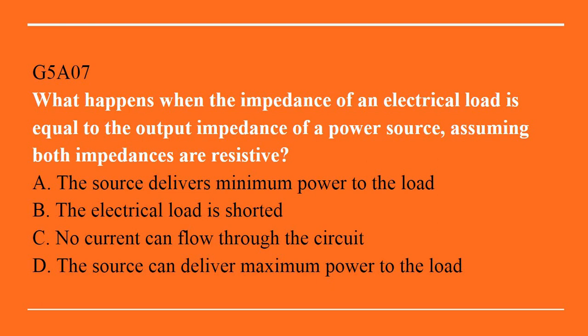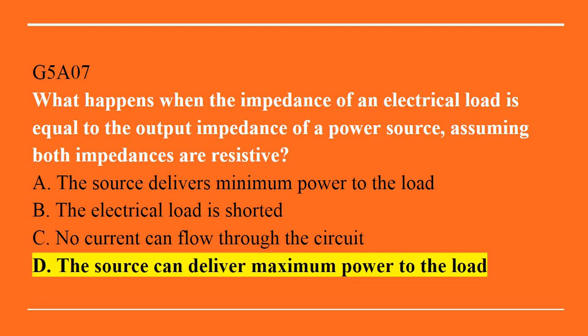G5A07: what happens when the impedance of an electrical load is equal to the output impedance of the power source, assuming both impedances are resistive? A. The source delivers minimum power to the load. B. The electrical load is shorted. C. No current can flow through the circuit. Or D. The source can deliver maximum power to the load. Answer is D: the source can deliver maximum power to the load.